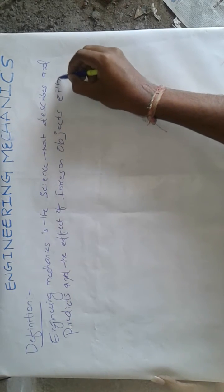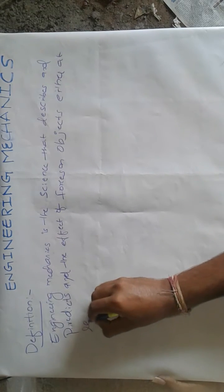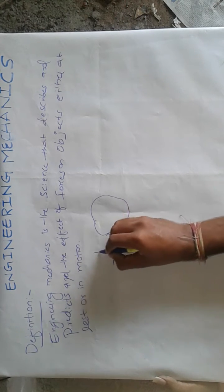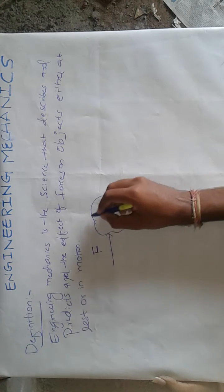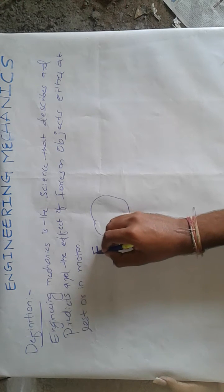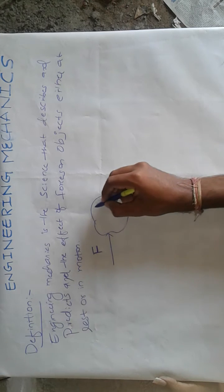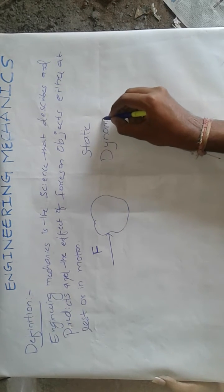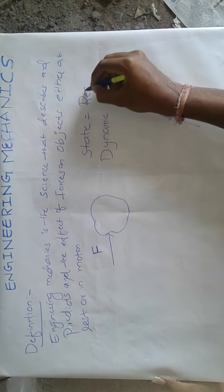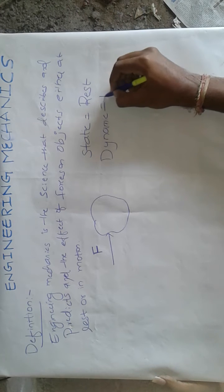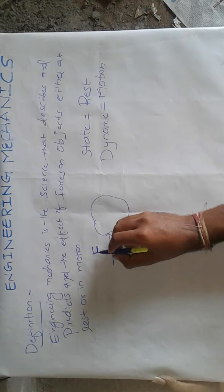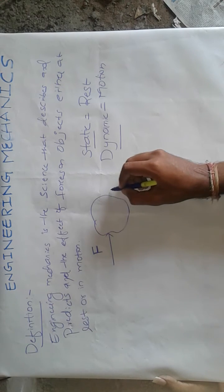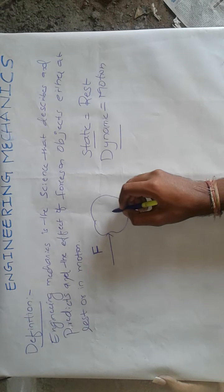Either at rest or in motion — consider a body; if I have applied a force F, what are the changes produced in the body? What is the effect produced by this particular force? We will deal in Engineering Mechanics with whether the body may be static or dynamic. A body which is at rest is said to be static, and the body which is in motion is said to be dynamic.